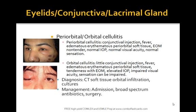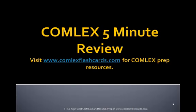With orbital cellulitis, you have increased intraocular pressure, impaired visual acuity, inability to move the eye muscles, and tenderness with extraocular muscles. Diagnosis relies on good physical exam, CT scan of the soft tissue for orbital infiltration, and cultures. Management of orbital cellulitis involves admitting the patient and starting broad-spectrum antibiotics; in rare cases, consider surgery.